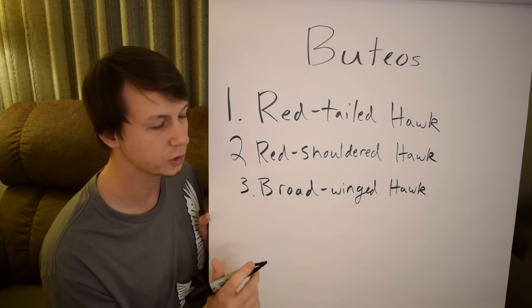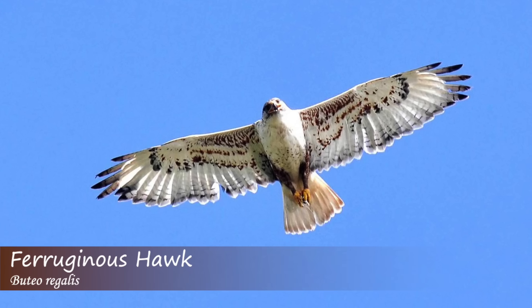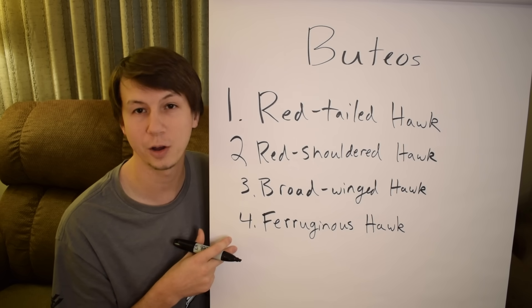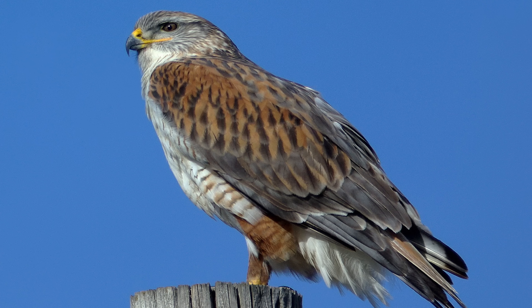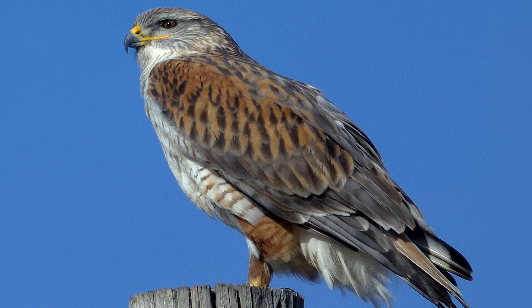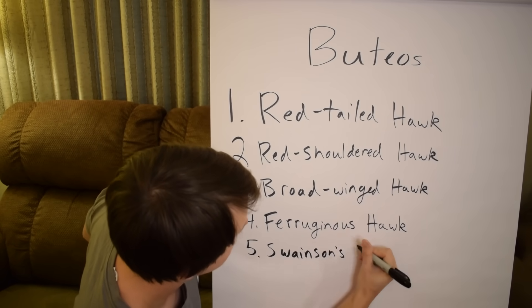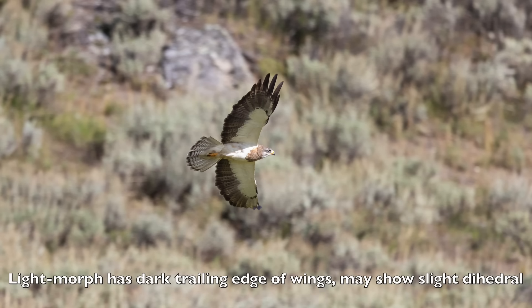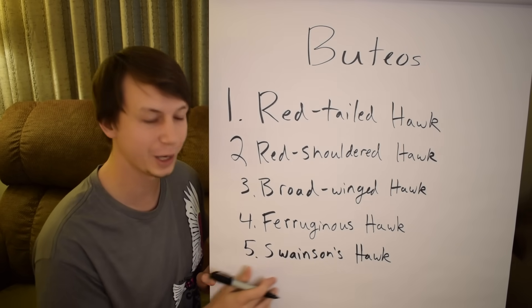Next up we have a more western species, the ferruginous hawk. They're going to have rust-colored legs and shoulders with paler underparts and pretty broad wings — they're the largest buteo in North America. They're mostly found in grasslands and deserts. Then we have another more west-central hawk, the Swainson's hawk. Swainson's hawks are medium size, generally with a brown chest, a paler stomach, and longer pointed wings. They also migrate in really large flocks, also known as kettles.